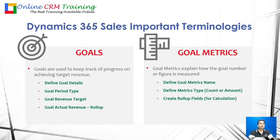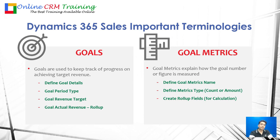You can also define a goal metric, which explains how the goal figure is measured. The goal metric type can be count or amount — for sales it is typically amount, while for tracking calls made in a day it would be count. You can also create roll-up fields for calculation, such as the sum of all opportunities with a specific status or all closed opportunities, to automatically calculate actual revenue against the goal.